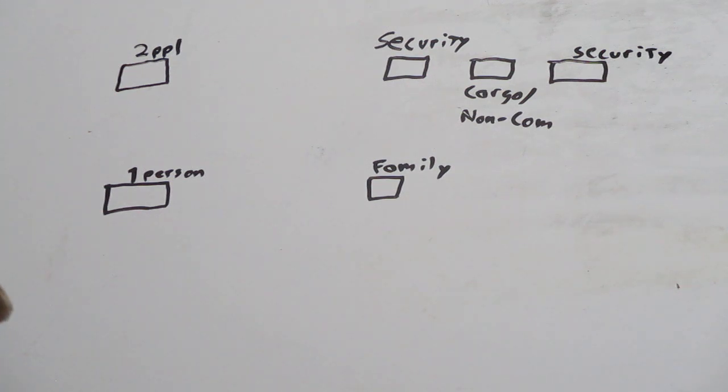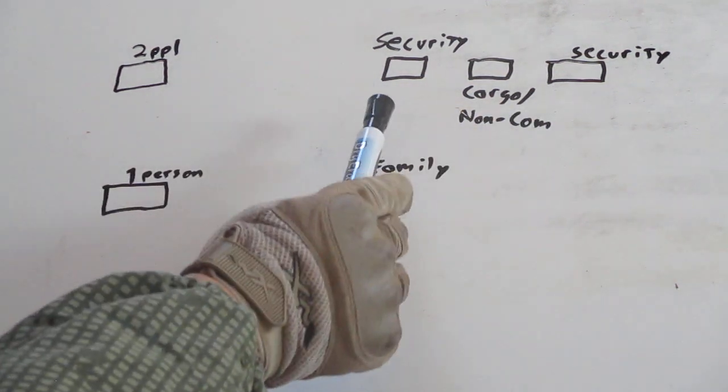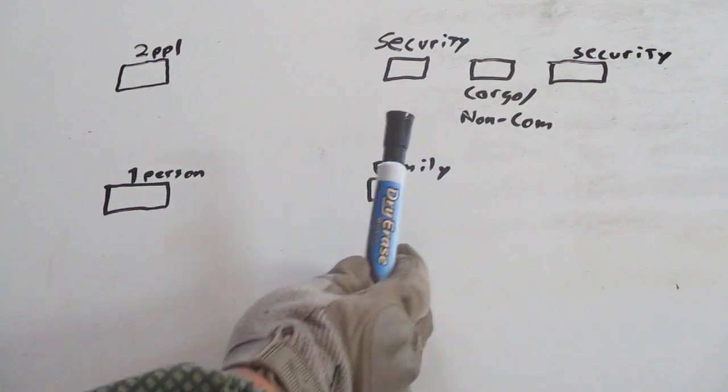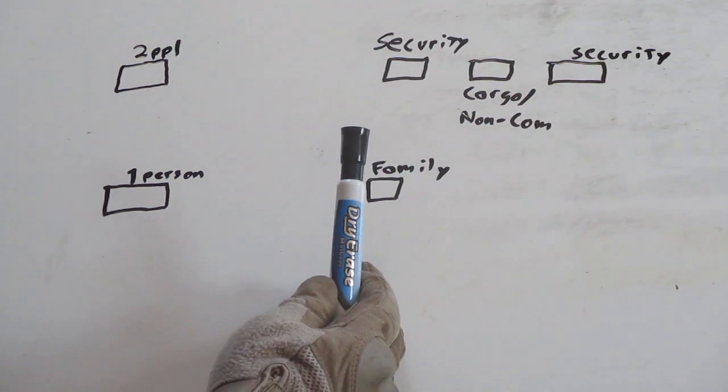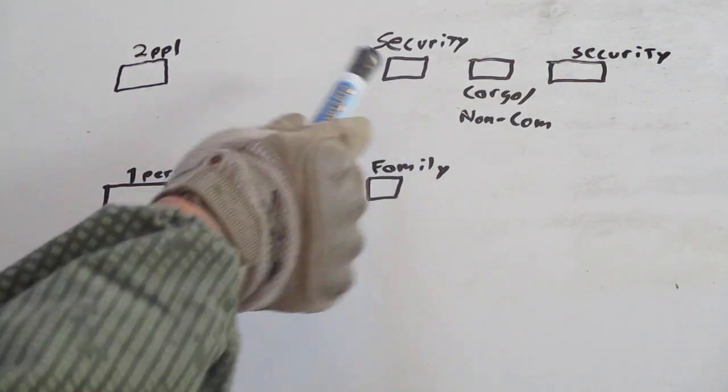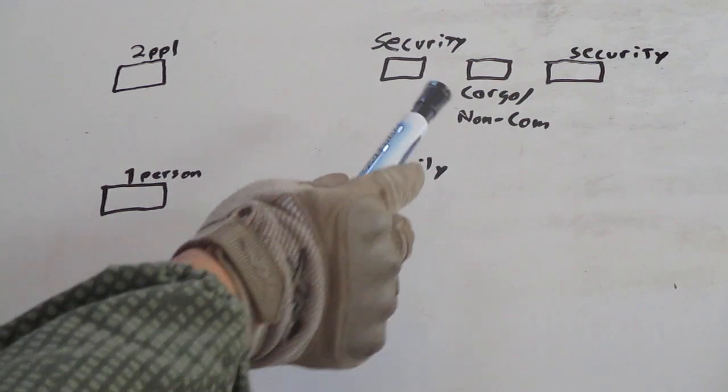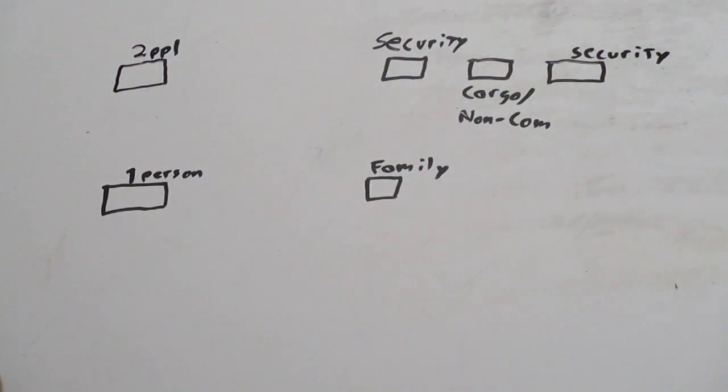Back in your convoy, regardless of the number of vehicles, you should have at least two dedicated to security: one in front, one at the rear. The one in front should have the majority of your security personnel, say four to six, depending on vehicle size. The one in back could have one or two less. In between those security vehicles will be your non-combatants and vehicles carrying cargo or supplies.